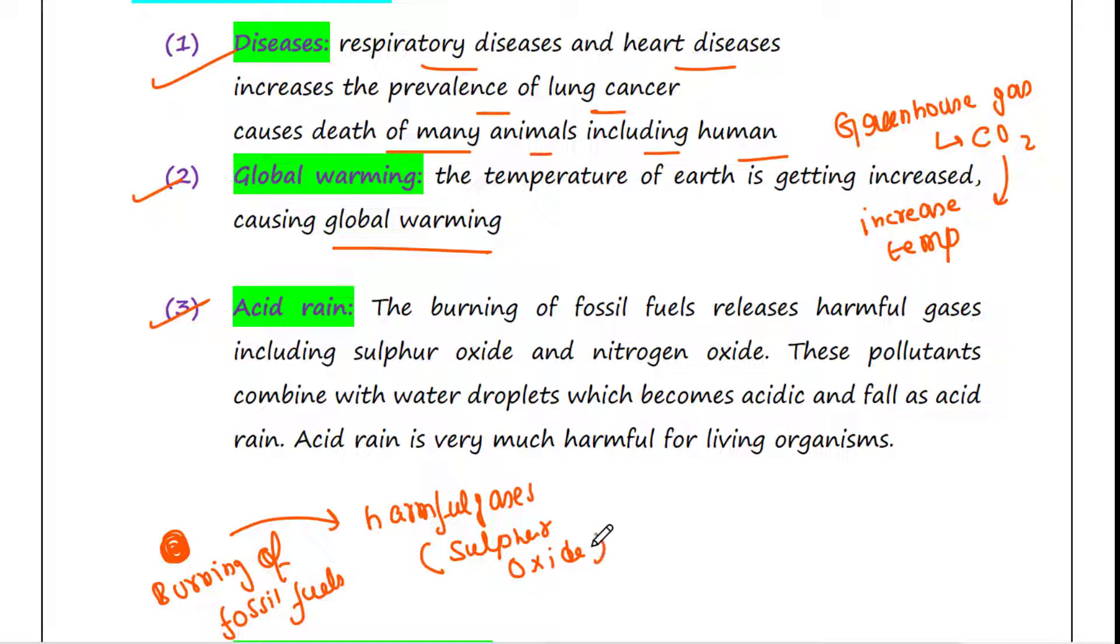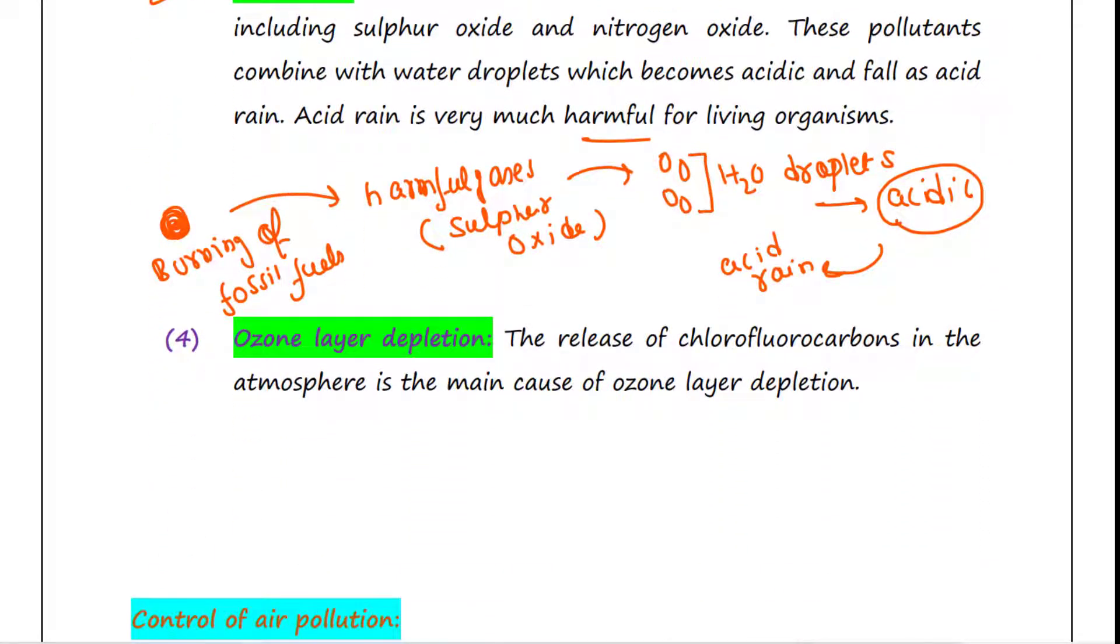These pollutants combine with water droplets and become acidic and fall as acid rain. Acid rain is very much harmful for living organisms.